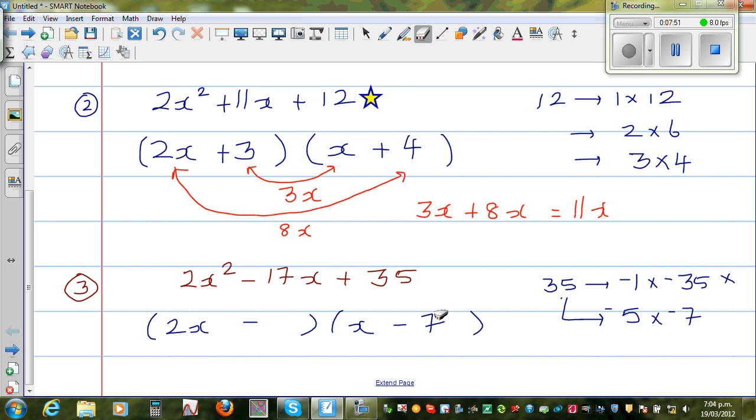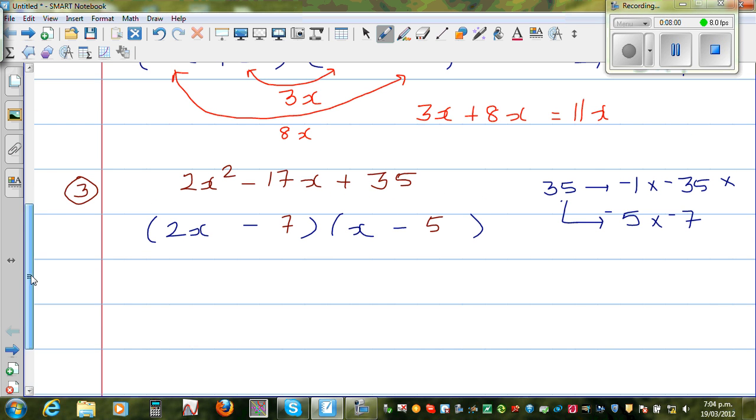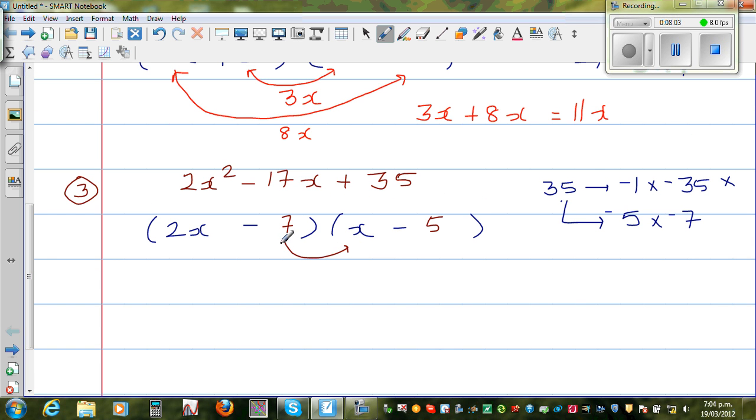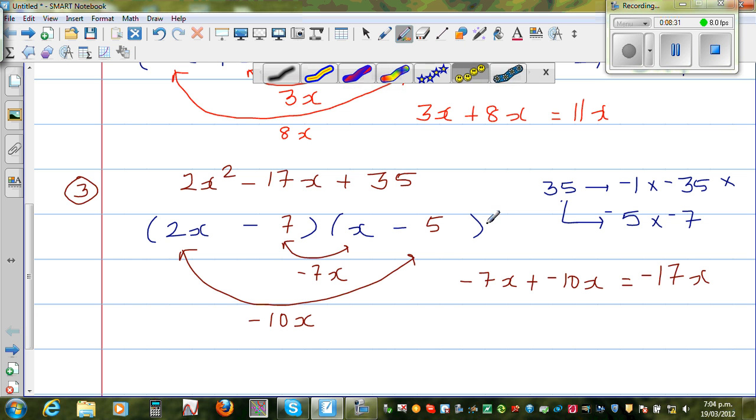Suppose let us put negative 7 and negative 5. Will this work? Let us try our luck. So this will give you minus 7x, and this will give us negative 10x. And there we can see negative 7x plus negative 10x is negative 17x. So this is right. We can give also a smiley face.